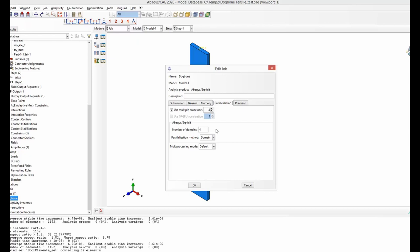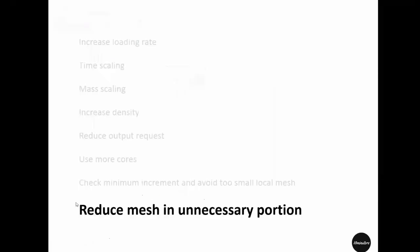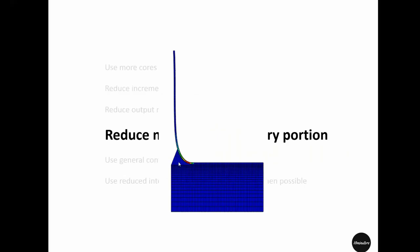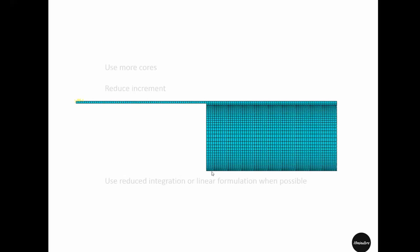The final tip is to reduce mesh in unnecessary portions of your model. In this example we are peeling off an arm from a base, and the interface region is the most important portion. Having larger elements in less critical portions is a good option, but meshing those portions with many elements is a bad choice that increases simulation time.